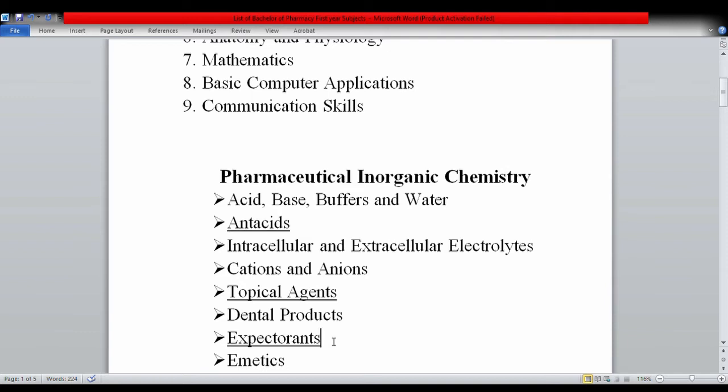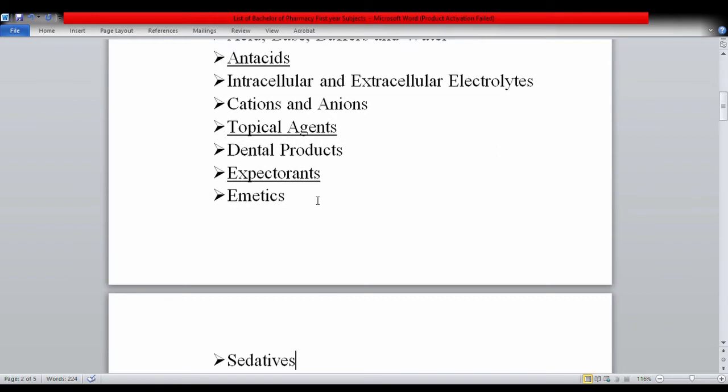There's decongestants, different topics. Emetics are drugs that cause vomiting, while anti-emetics stop vomiting. Examples of emetics include morphine and sodium chloride.